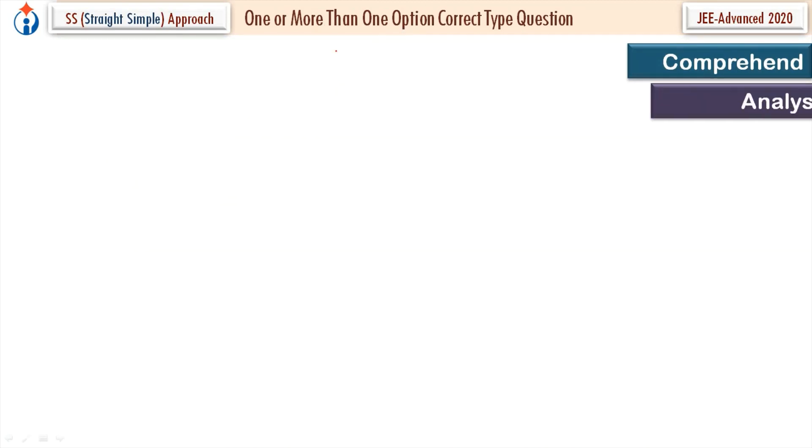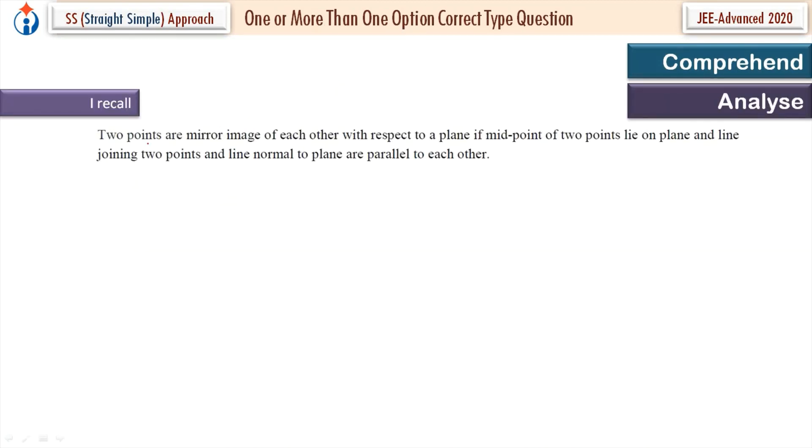Let's analyze. So I recall two points are mirror image of each other with respect to a plane if midpoint of two points lie on the plane and line joining two points and line normal to plane are parallel to each other.